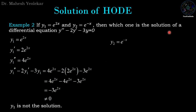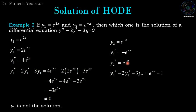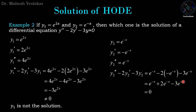For y₂ = e^(-x): y₂' = -e^(-x), y₂'' = e^(-x). Substituting: e^(-x) + 2e^(-x) - 3e^(-x) = 0. Therefore y₂ is a solution of the differential equation.